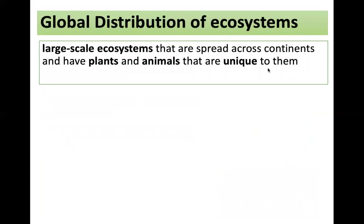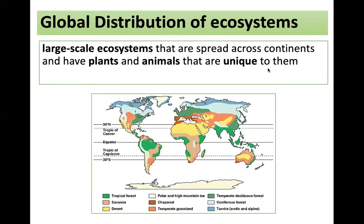Ecosystems can be classed as biomes — large-scale ecosystems that are spread across continents and have plants and animals that are unique to them. These are our biomes of the world. You can see that around the equator we have tropical rainforests, where we live we have temperate deciduous forests, going into coniferous forests and tundra.